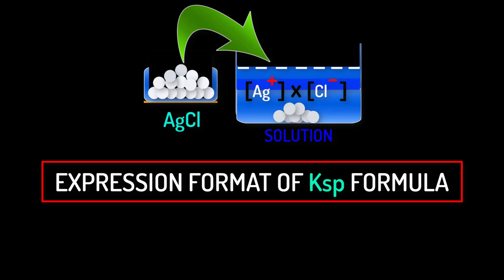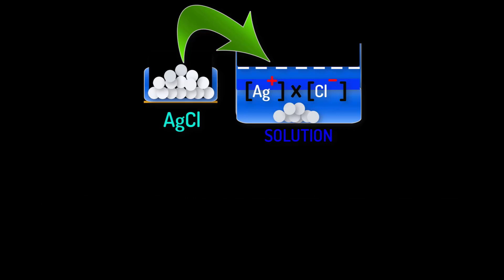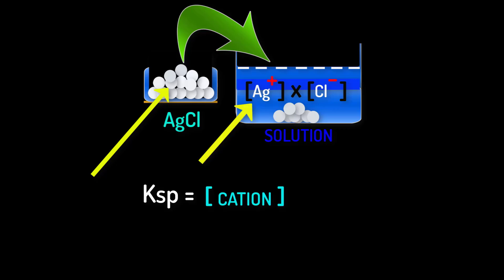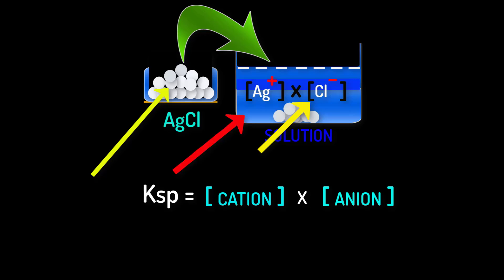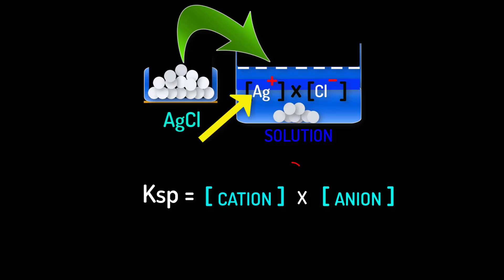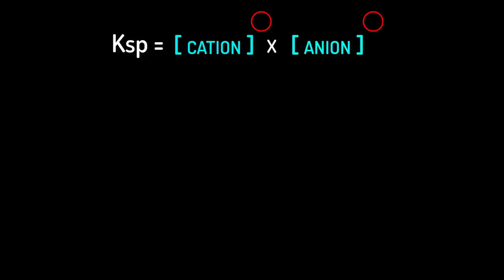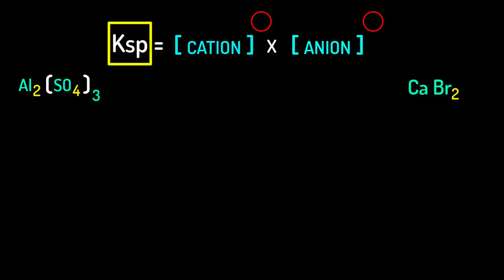Now we will learn the expression format of the KSP formula for any type of slightly soluble salt. KSP equals the concentration of the cation of the dissolved salt times the concentration of the anion of the dissolved salt. The condition is that the coefficient — the mole number — of the cation will go as the cation's power, and the mole number of the anion will go as the anion's power. Can you tell me what will be the KSP formula for aluminum sulfate and calcium bromide respectively?